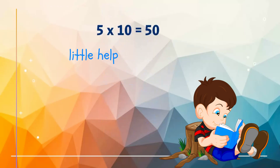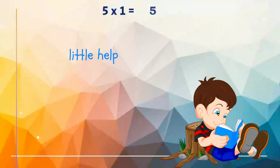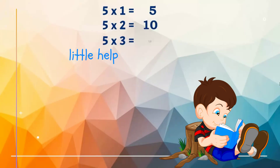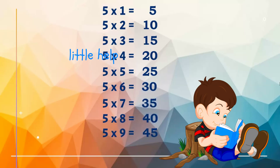Five tens are fifty. Five ones are five, five twos are ten, five threes are fifteen, five fours are twenty, five fives are twenty-five, five sixes are thirty, five sevens are thirty-five, five eights are forty, five nines are forty-five, five tens are fifty.